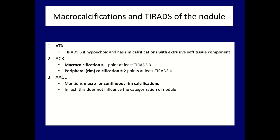If we see a peripheral rim calcification, the lesion should be classified at least as a TIRADS 4 lesion. The ACR TIRADS also mentions the presence of macro-calcification or continuous rim calcification. Nevertheless, this does not influence the categorization of the nodule. Neither the Korean nor the European TIRADS mentions or involves coarse calcification into their systems.